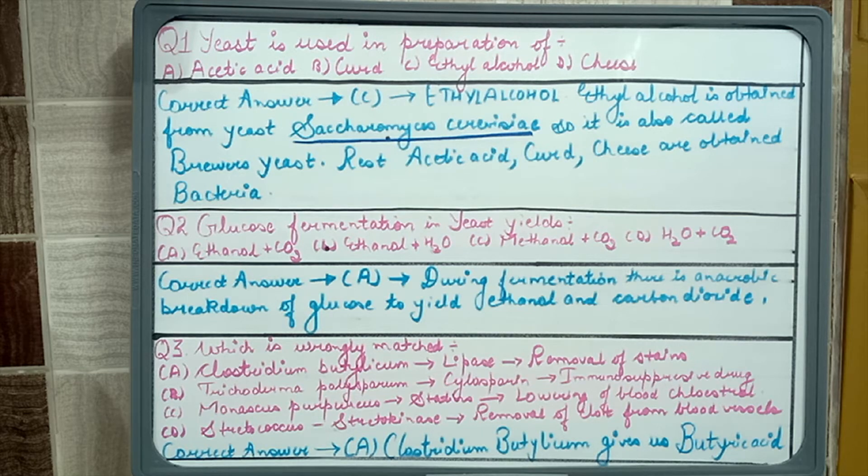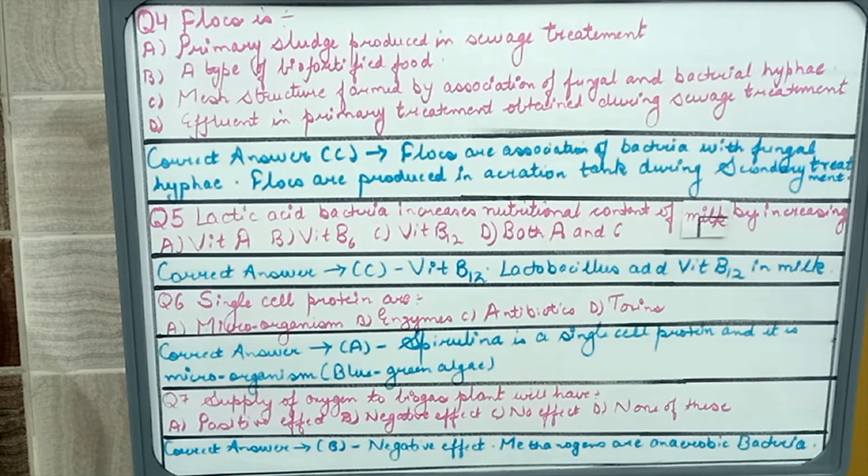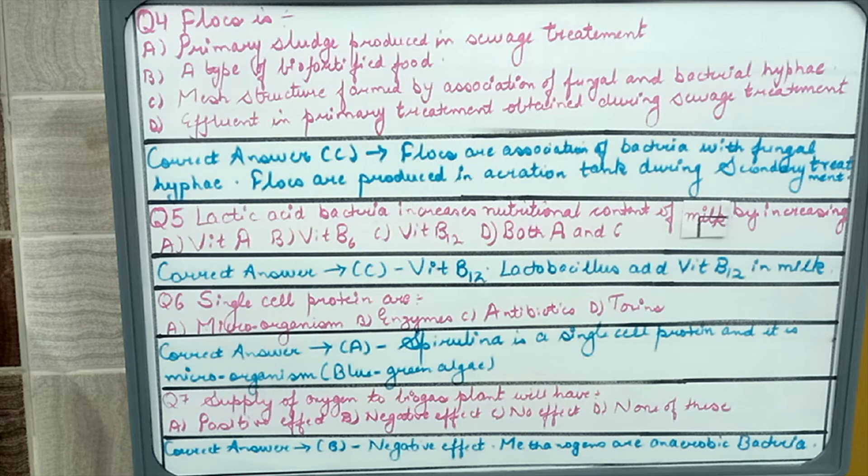Question fourth is: flocks are primary sludge produced in sewage treatment, a type of biofortified food, mesh structure formed by association of fungal and bacterial hyphae, or effluent in primary treatment. The correct answer is option C. Flocks are association of fungal and bacterial hyphae which are produced in aeration tank during secondary treatment.